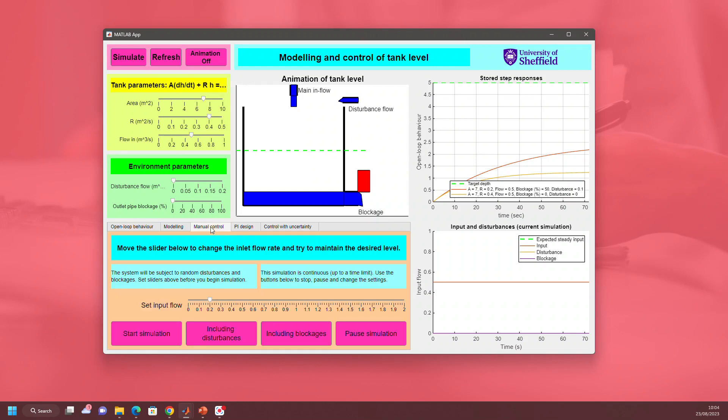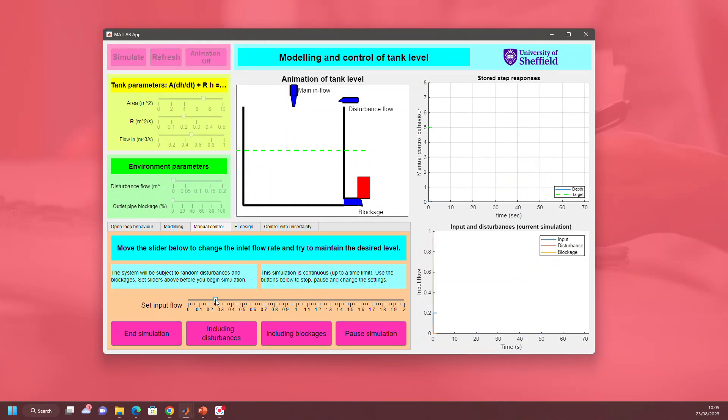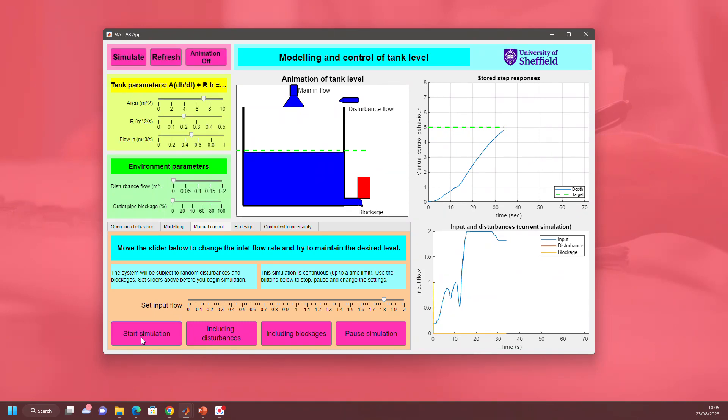Let's try manual control. Manual control is where you set the input flow using this slider and try to get the depth to this green line. Let's start the simulation. As I change the input, you'll see in the bottom right figure the slider changes the input flow. In the picture at the top, you'll see how the input flow changes. What I want to do is get the depth up to that level. The question is, can I manage it? We're getting there with a very large inlet flow.